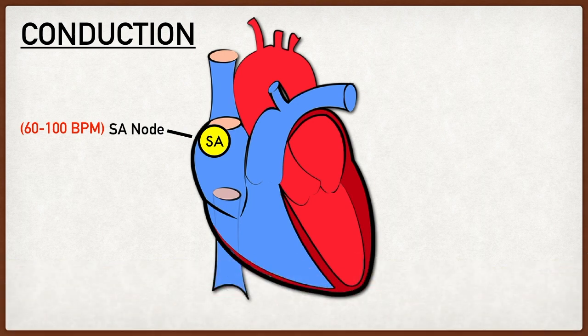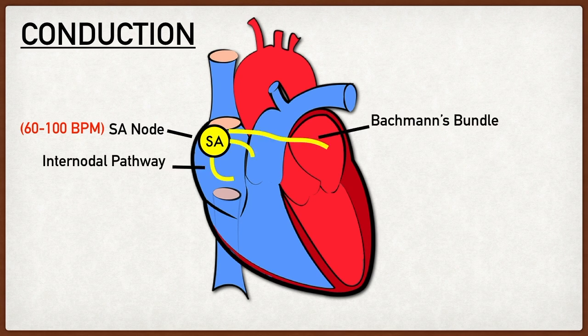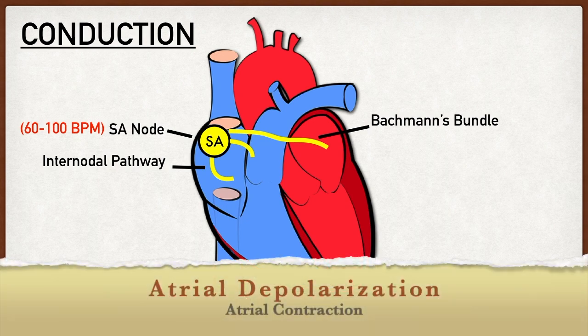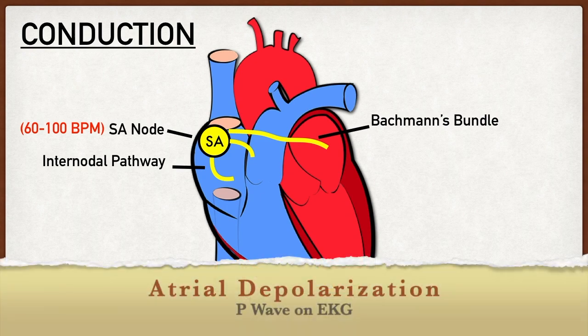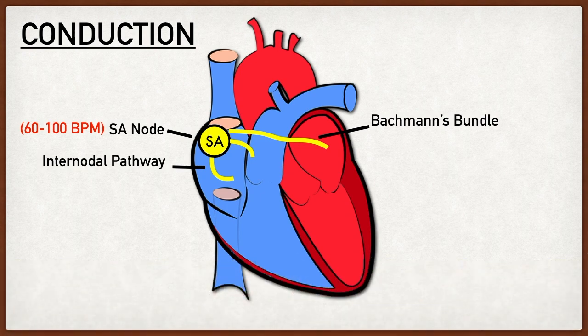Once an action potential is generated by the SA node, it travels to the left atrium using Bachmann's bundle and through the right atrium using the internodal pathway. As this action potential travels through the atria, it leads to atrial depolarization — and when the atrial myocytes become depolarized, they contract. This atrial depolarization creates the P-wave seen on an EKG.